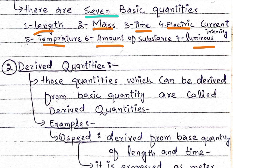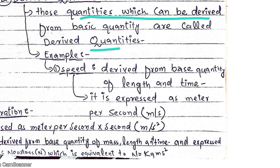Derived physical quantities are those quantities which can be derived from the basic quantities. Other physical quantities that are not basic are derived from these base physical quantities. For example, physical quantities like power and others are derived quantities.